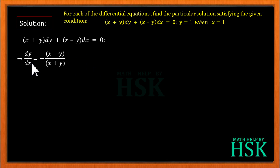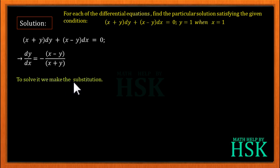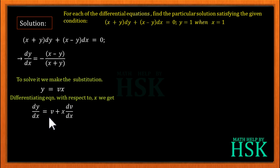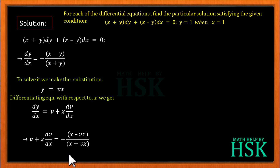Now let us solve this homogeneous differential equation. We have dy/dx = -(x - y)/(x + y). To solve further, we make the substitution y = vx. Differentiating both sides with respect to x gives dy/dx = v + x(dv/dx). We substitute dy/dx = v + x(dv/dx) and y = vx into the equation.